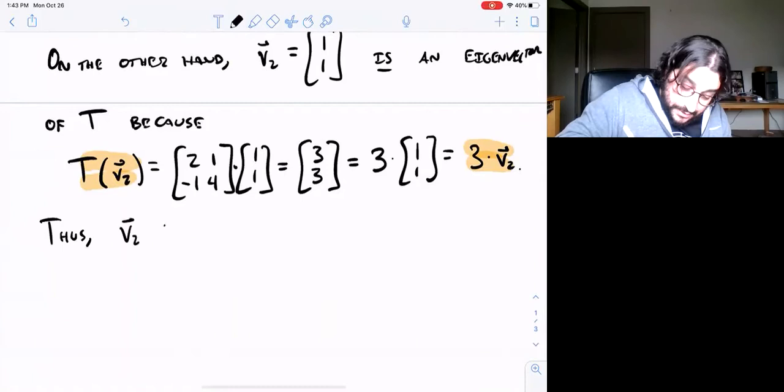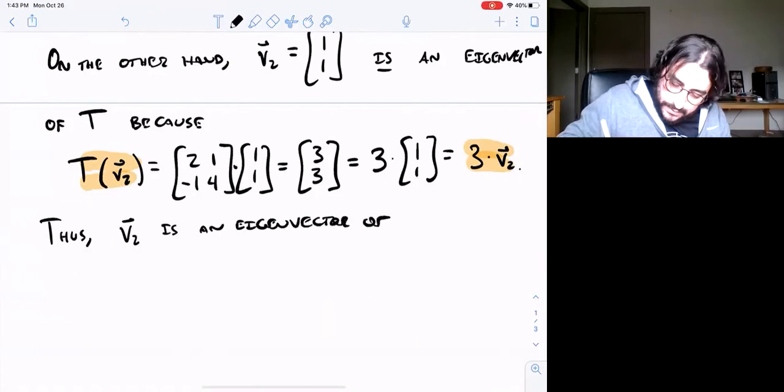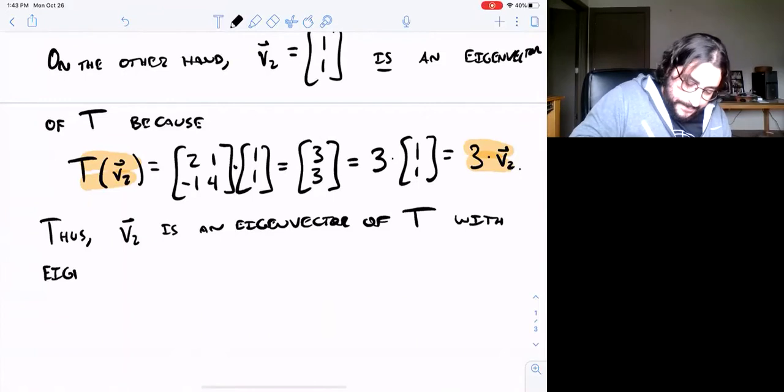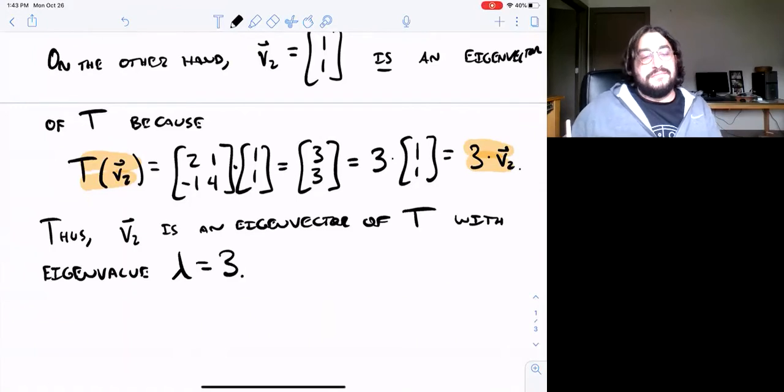What's nice too is notice here we found the eigenvalue - it happens to be 3, that's the scalar that we got. We would say v2 is an eigenvector of T with eigenvalue λ = 3. So there's an example of an eigenvalue and eigenvector as opposed to a non-example.